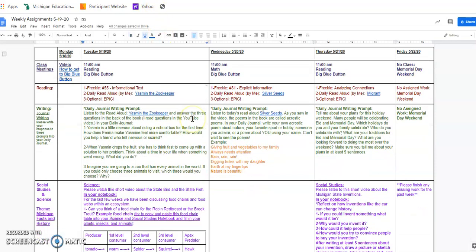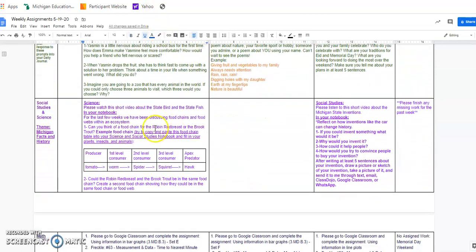Again, if you're reading this for your assignments, the assignment is having you then think about the state bird and the state fish, the robin red breast and the brook trout, and think about how they could fit into a food chain. So please review this example that I put in your weekly assignments as well. And let me know if you have any questions. Thanks for watching.